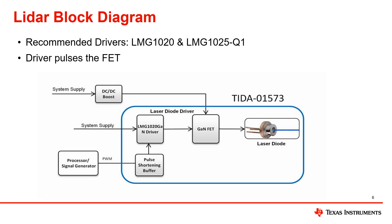The picture on the screen shows a block diagram of a general LiDAR application from our reference design, TIDA-01573, which I will link at the end for your convenience. Some of the key components are in the blue box, which include a buffer for nanosecond pulse widths, the driver, FET, and laser diode. The driver will pulse the FET on and off so that the laser diode can send out multiple pulses to map objects and their distances.